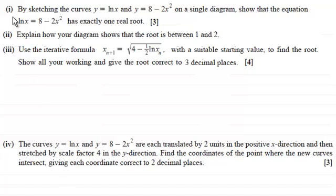So the first part of the question is by sketching the curves y equals the natural log of x and y equals 8 minus 2x squared on a single diagram, show that the equation ln(x) equals 8 minus 2x squared has exactly one real root.